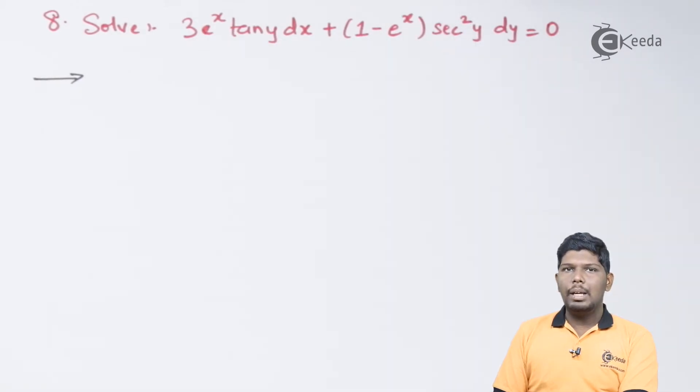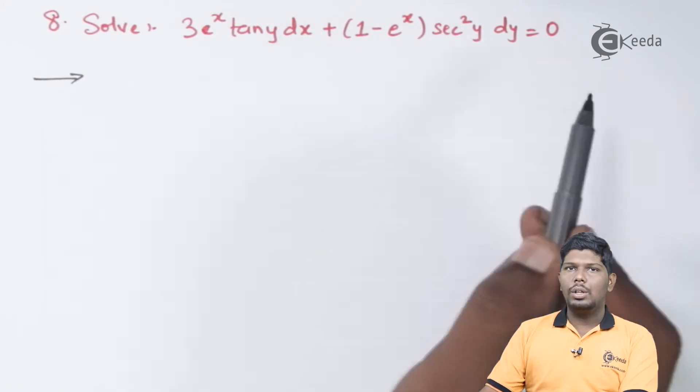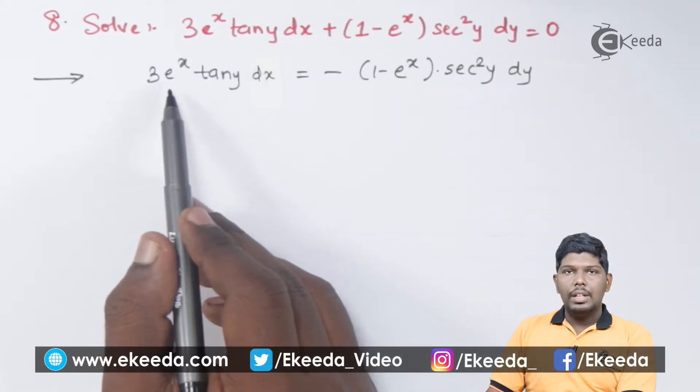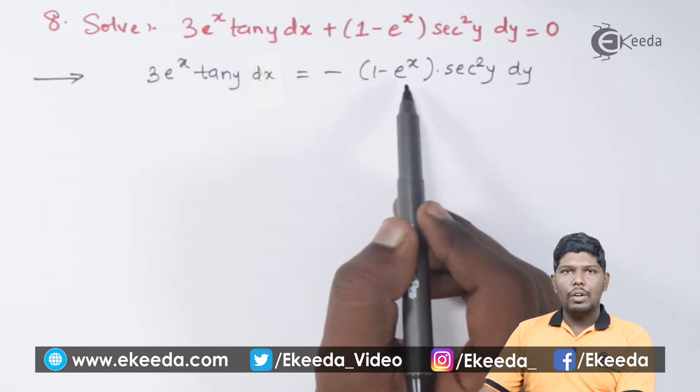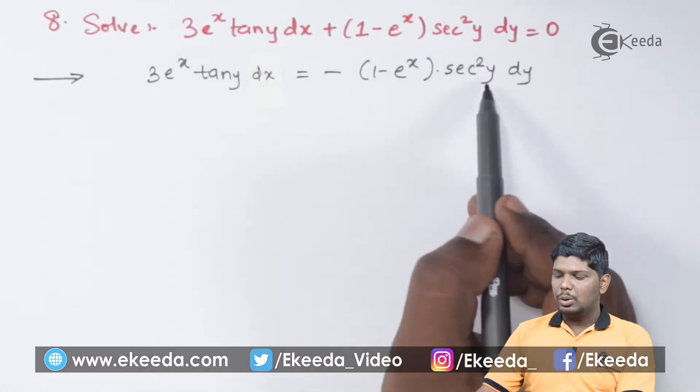Now, to separate the variables, you can take this term first on the right hand. We have 3 e raise to x tan y dx is equal to minus of 1 minus e raise to x sec square y dy.